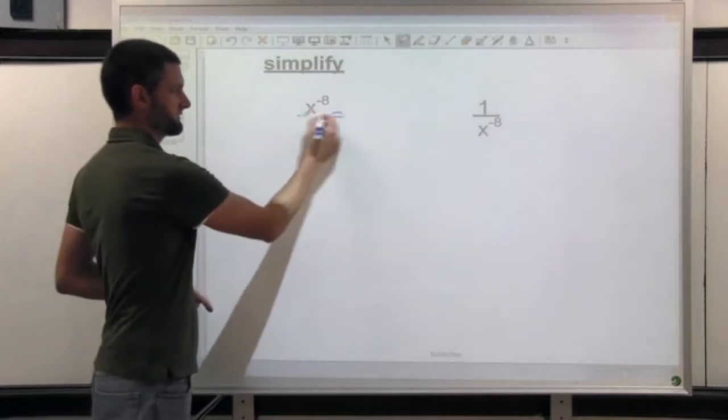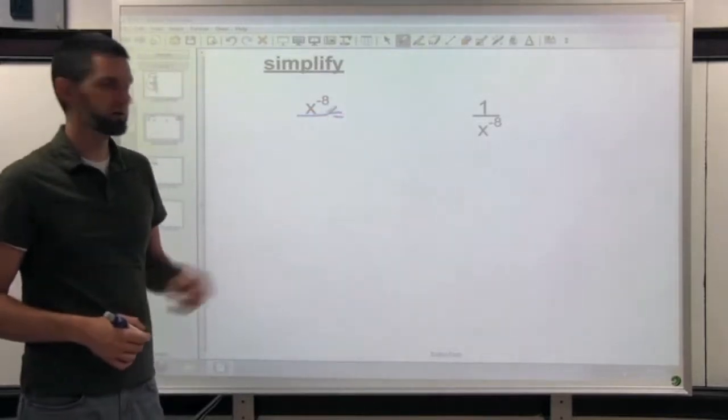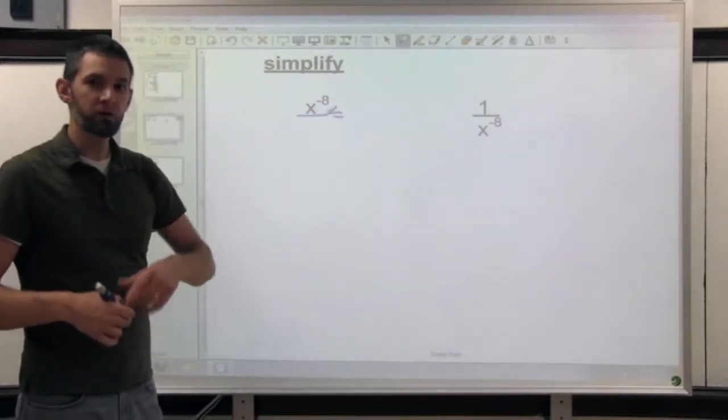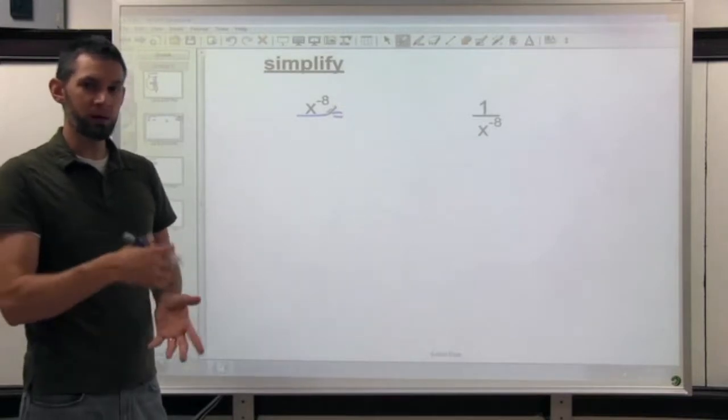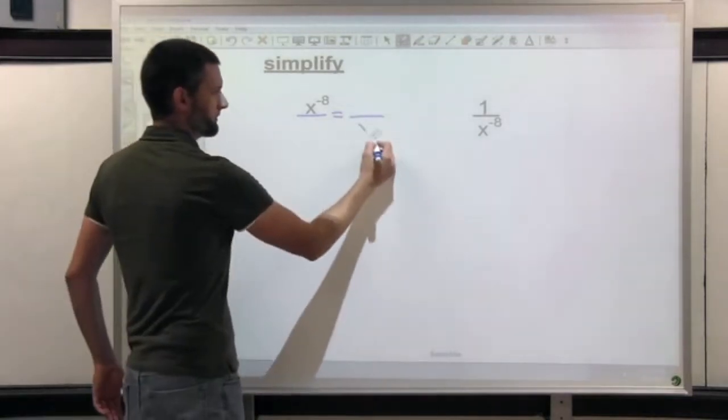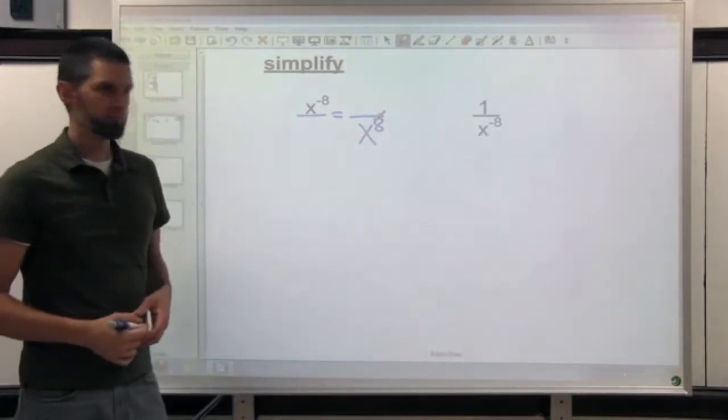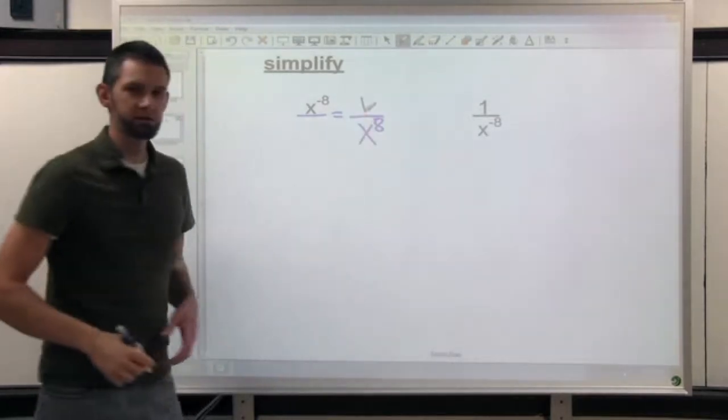This x to the negative 8 is on the top of a fraction right now. It's over 1. If I don't want it to be negative anymore, I just make it a reciprocal. I put that x to the 8 on the bottom and then I'll put that 1 up on the top.